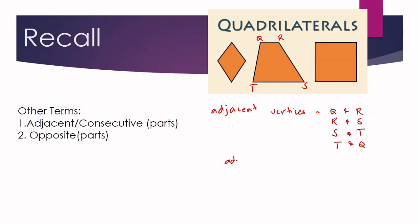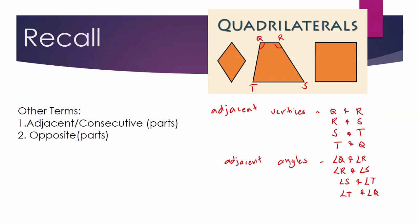If we are asked for pairs of adjacent angles, again there are four pairs. We have angle Q and angle R, angle R is also adjacent to angle S, angle S is also adjacent to angle T, and angle T is also adjacent to angle Q. So if you are asked for adjacent or consecutive parts — whether sides, vertices, or angles — in a quadrilateral there are always four pairs.